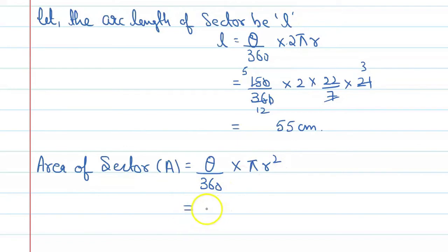So, what is the value of theta? It is 150 upon 360 into 22 upon 7 and what is the value of R? R is 21. So, write it here, 21 into 21.